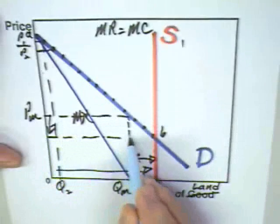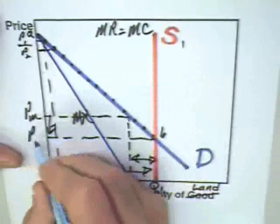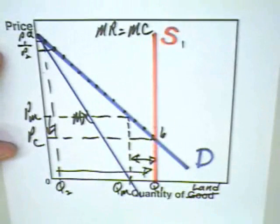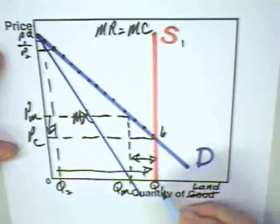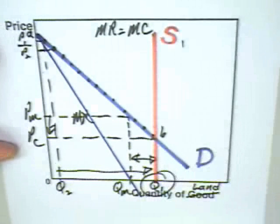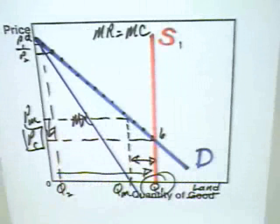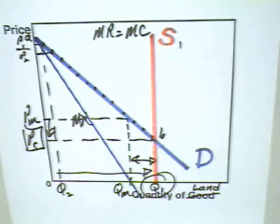The ironic part of this analysis is what Coase suggested, and that is, in order to get rid of the entire quantity of Q1 units of land, the monopolist would have to charge a price of PC, which is the competitive price.